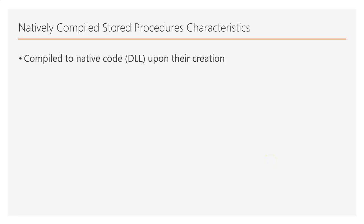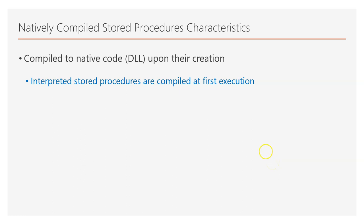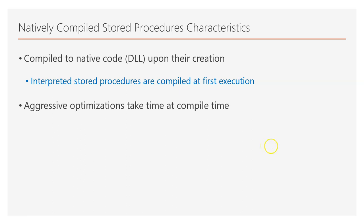One thing to note is that they are compiled to native code — that is, a DLL — upon their creation. On the other hand, interpreted stored procedures are compiled at first execution, and this gives a significant performance advantage to natively compiled stored procedures. Also note that during the compile time of natively compiled stored procedures, there are aggressive optimizations that are taking place.